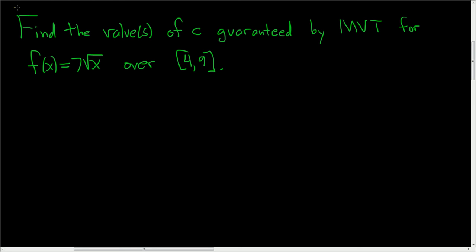Find the values of C guaranteed by the mean value theorem for the following function over the interval 4 comma 9. Solution.